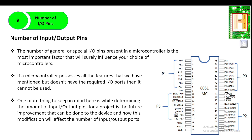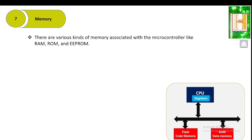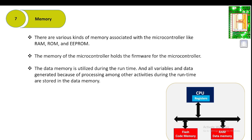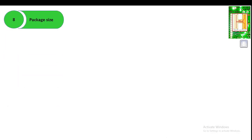The next important step is memory. There are various kinds of memory associated with microcontrollers, like RAM, ROM, and EEPROM. The memory holds the firmware of the microcontroller. Data memory is utilized during runtime, where all data generated by processing and other activities is stored. Based on the complexity of computation occurring during runtime, one can determine the amount of memory needed for the microcontroller.